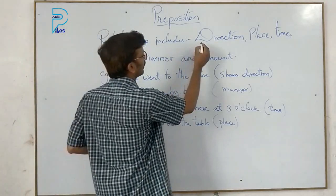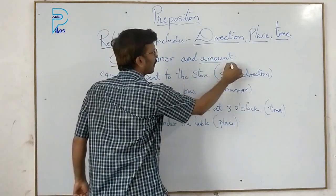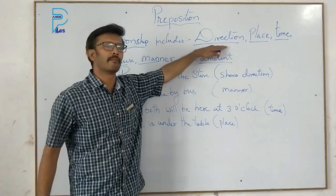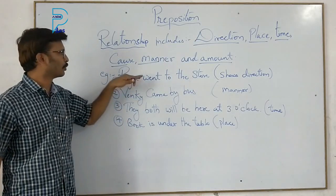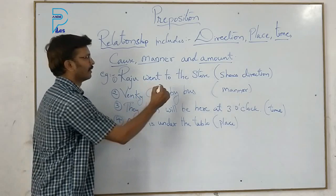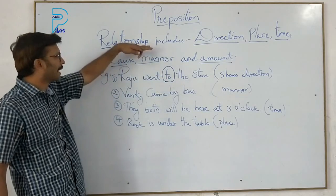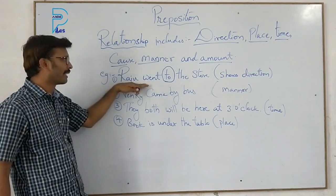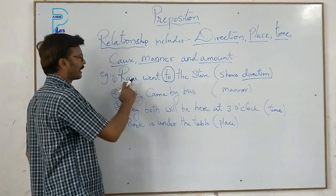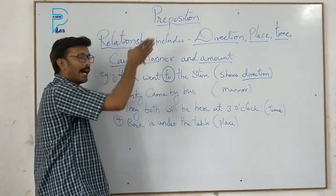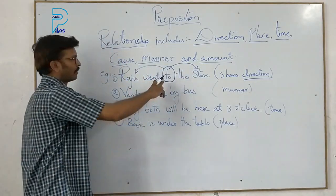Now let us see what relationships are included in prepositions. The relationships include directions, place, time, cause, manner, and amount. For example, 'Raju went to the store' — here the preposition 'to' is used for direction, showing where Raju went.